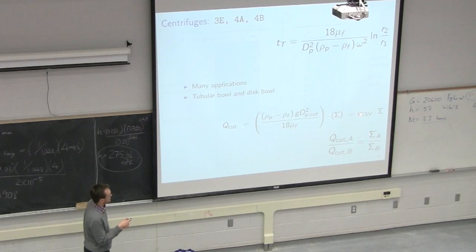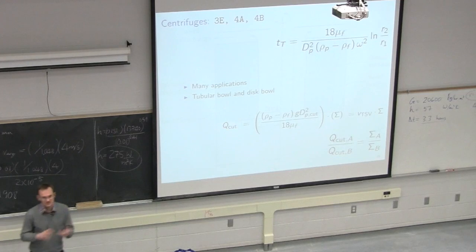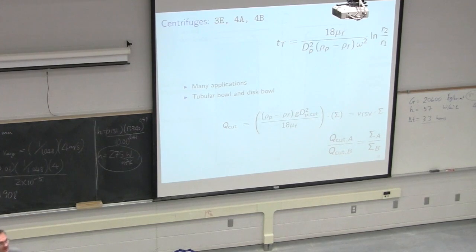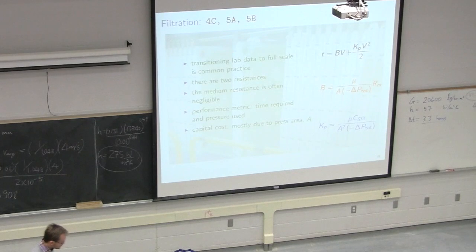But what I can go do is take that fluid and run it in a different centrifuge, A versus B. So centrifuge A, centrifuge B, and then I can specify Q cut A and calculate Q cut B. So specify three out of the four variables in that equation if you're transferring from one centrifuge to another centrifuge. That would be one way to use that equation. We saw that in an assignment question as well.